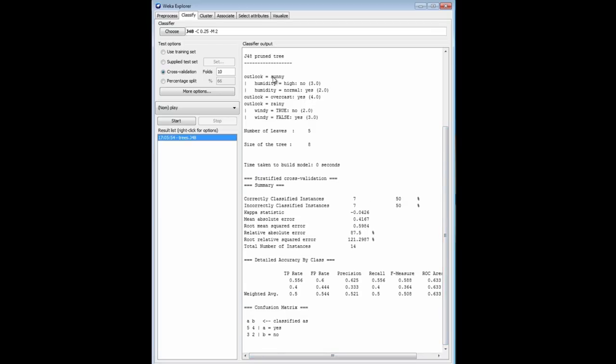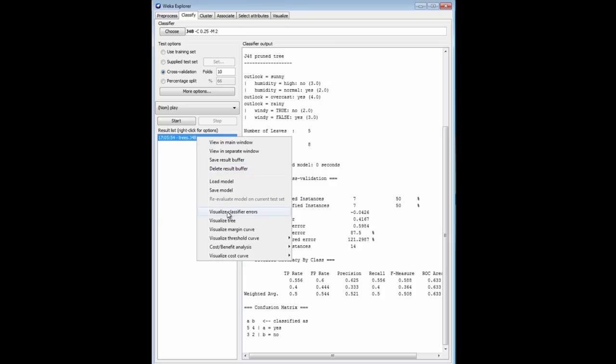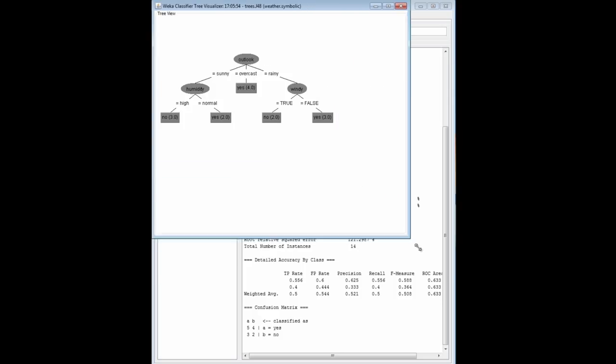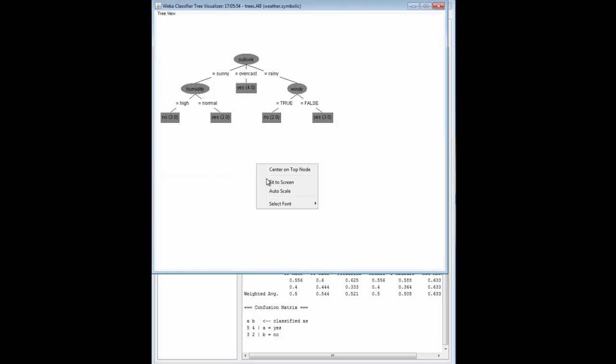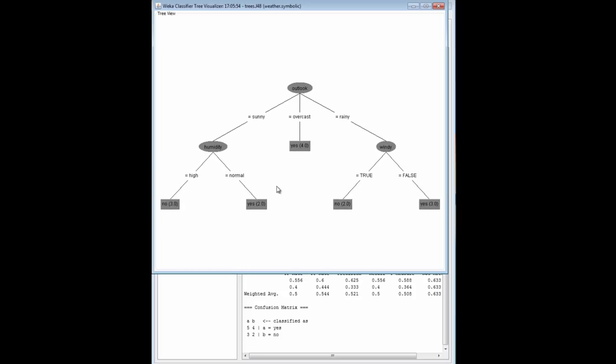Split first on Outlook, sunny, overcast, rainy, and then if it's sunny, split on humidity. Three instances reach that node, then split on normal, three yes instances reach that node, and so on. We can look at the tree using the Visualize, the right-click menu, Visualize the Tree. Here it is, and we'll fit that to the screen. These are the number of yes instances that reach this node, and the number of no instances.